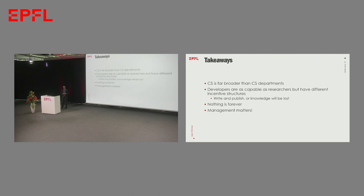One of the things I learned from Microsoft Research is that CS is far broader than computer science departments. Microsoft Research had 400 researchers in Seattle spanning the full spectrum — a lot of people without CS backgrounds doing computer science. It was a very broad, diverse perspective on the field which I think CS departments really need to incorporate. I also came away very impressed with developers — they're as capable as researchers, they just have very different incentive structures. Nothing is forever; Microsoft Research has changed, it's not what it used to be. And management really matters, particularly when you're in the middle of it.